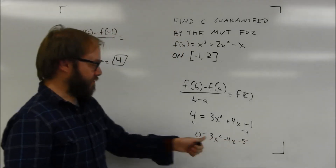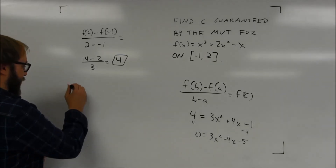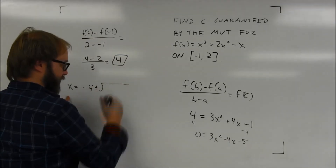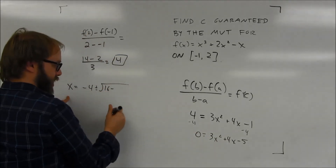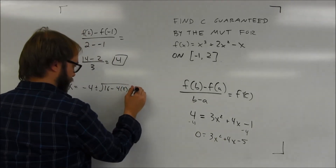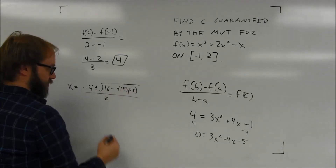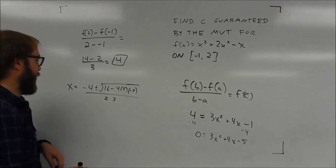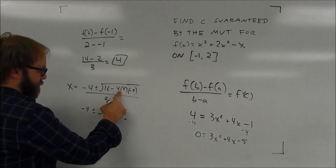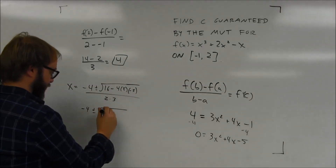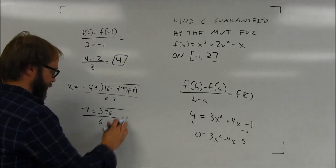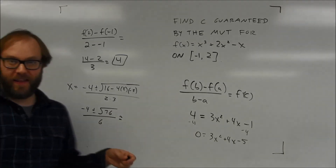Using the quadratic formula, x equals negative b plus or minus the square root of b squared minus 4ac, all over 2a. That's negative 4 plus or minus the square root of 16 plus 60, which is the square root of 76, all over 6. This doesn't give a whole number value. Putting it in a calculator — AP says it's okay to round to three or more decimal places — you get approximately 0.786 and approximately negative 2.1196.